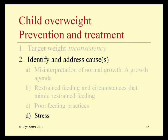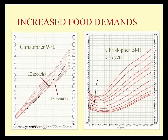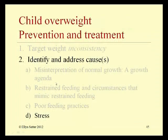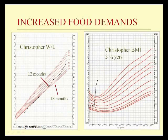By now you're catching on that these causes can run together and the children can show more than one cause. Ryan certainly had a lot of stress in his life, which could have exacerbated his excessive weight gain. Christopher's early growth record shows gradual acceleration toward the mean — Christopher is the person who really shows the effects of stress.